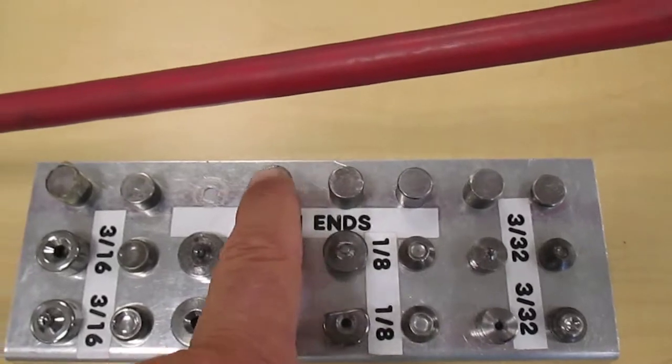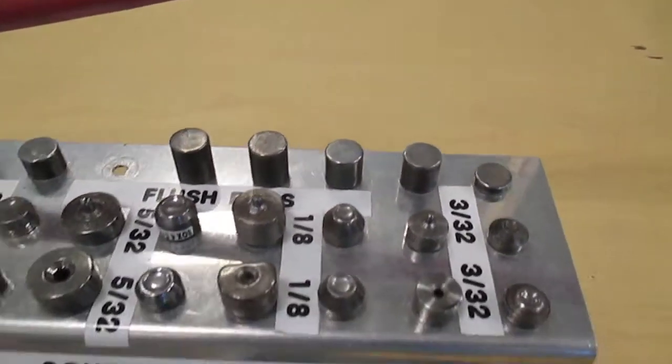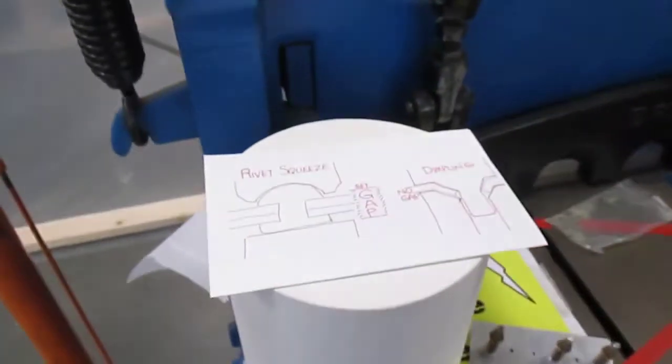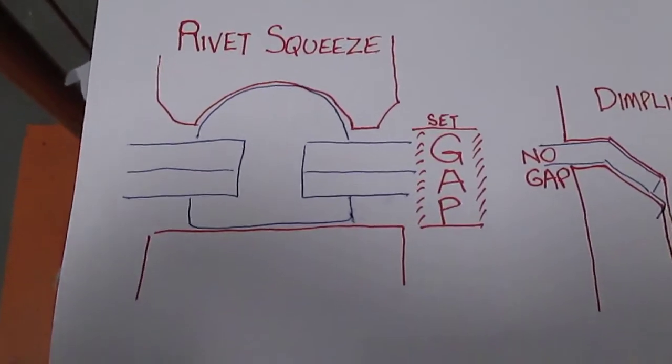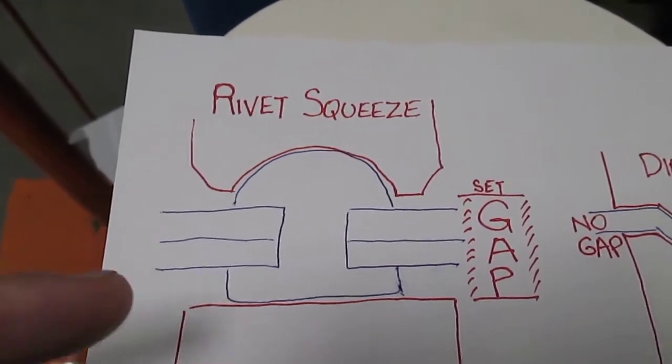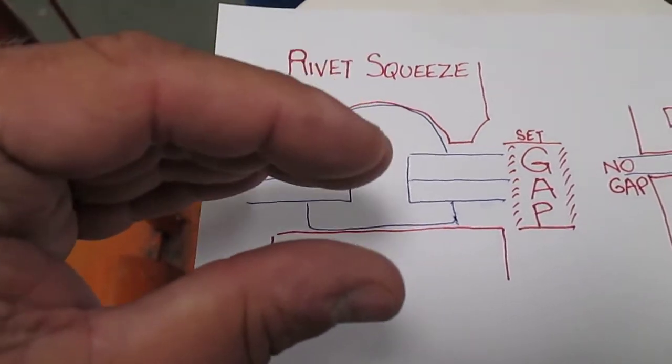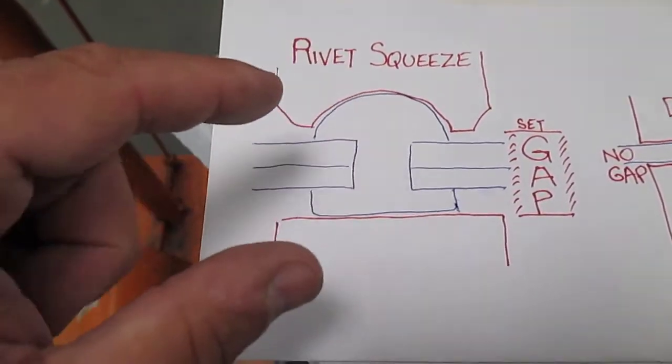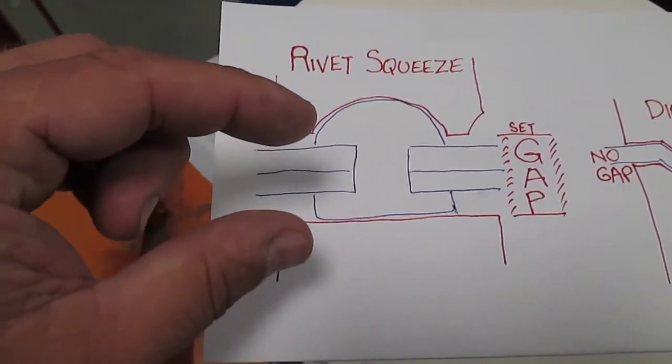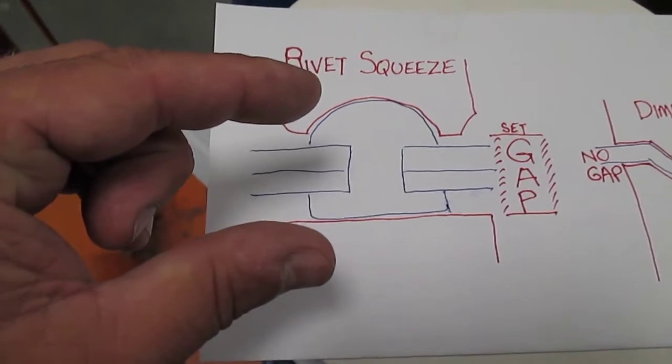We've got these tools here which act as our bucking bar or as our flush set. The big thing is it's all about setting height. When we set up the rivet squeezer for squeezing rivets, we need to make sure that when the two parts of the squeezer come together there's a stop. We need to make sure that when we put our little rivet sets in top and bottom, we have to have a gap in between there.